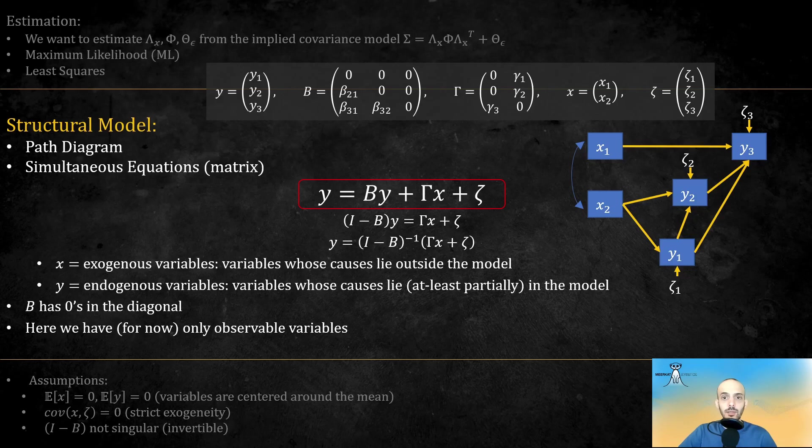An important distinction here is between exogenous and endogenous variables. The x's, the exogenous variables, are variables whose causes lie outside the model. The y's, the endogenous variables, are variables whose causes lie, at least partially, in the model. If we develop the equations a bit, we can get a reduced form, where the endogenous variables are expressed only in terms of the exogenous. Notice that for now, we only have observable variables, that is, rectangles.